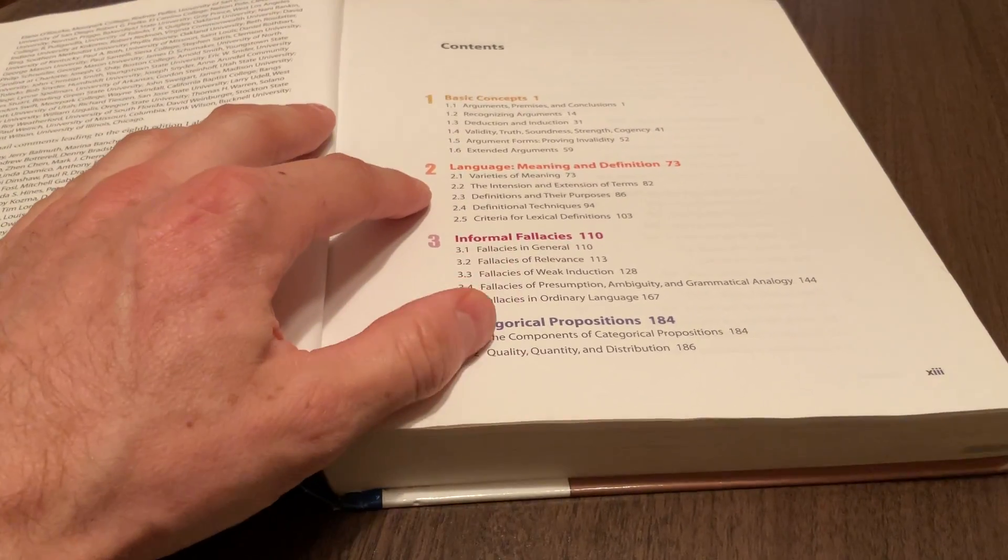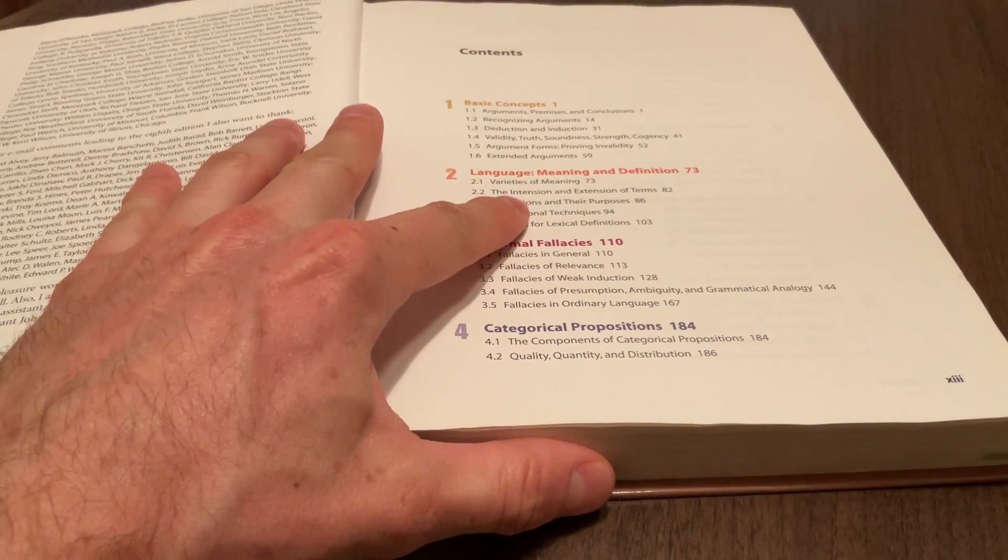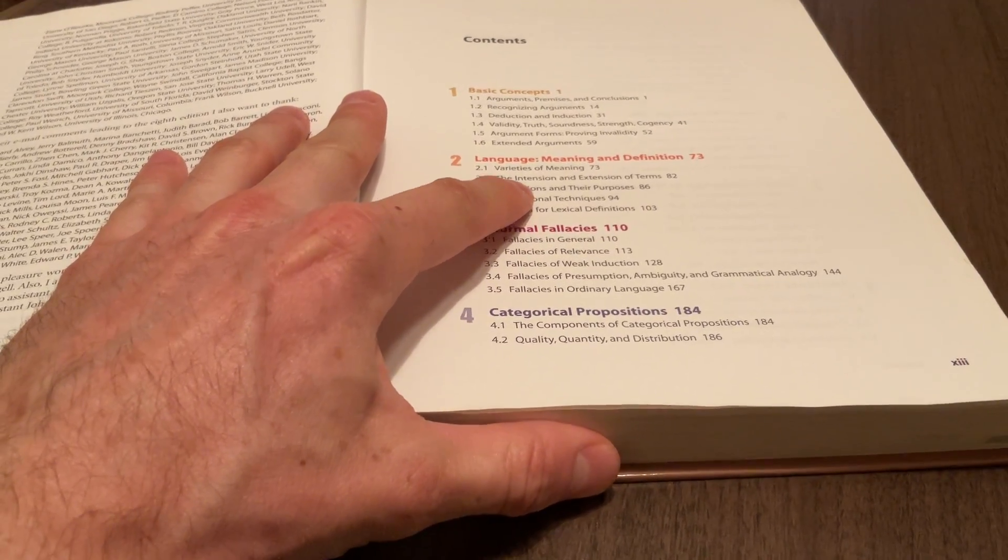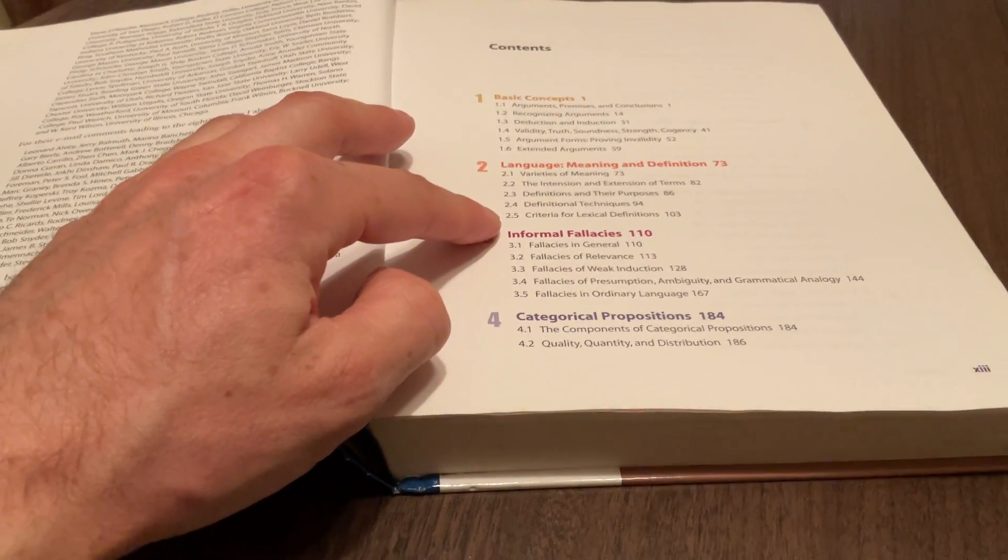Chapter two is on language, meaning, and definition. For example, what's the difference between the intension and extension of terms? What's a good definition? What's a bad definition?